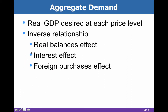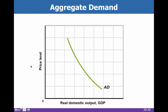Aggregate demand is basically all of the demand added together — the demand of businesses. So you've got IG plus C plus G plus X, and that's GDP. GDP and aggregate demand have a lot of parallels. There's an inverse relationship, and you already know the real balances effect, the interest rate effect, and the foreign purchases effect from the reading. Aggregate demand is downward sloping.